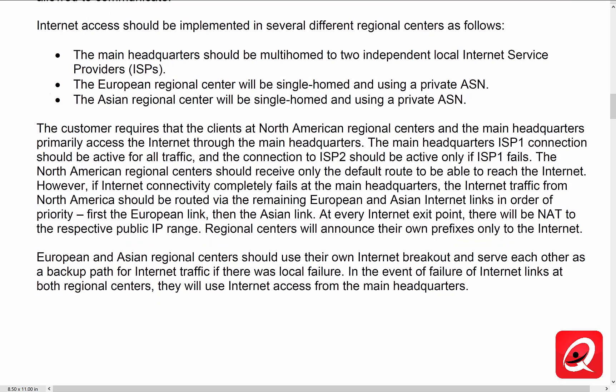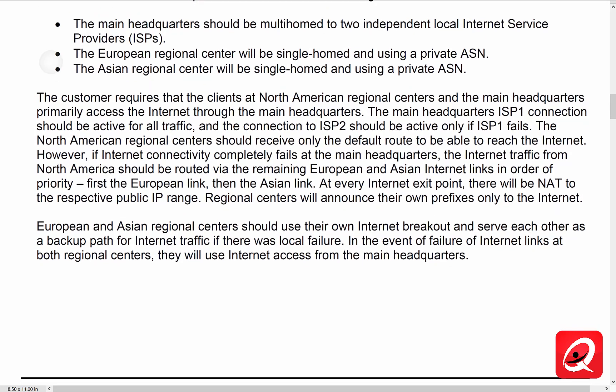Internet access should be implemented in several different regional centers as follows. The main headquarters should be multi-homed with two independent local internet service providers, meaning we'll have two routers at the headquarters location being multi-homed to two separate ISPs. The European regional center will be a single-homed connection using a private ASN, and the Asian regional center will be a single home using a private ASN. So in the case of our headquarters location, we're most likely going to use provider-independent addressing — essentially becoming the service provider for that address space. At the Asia and European regional centers, we're going to use provider-provided or provider-assigned addresses because we are using a private ASN. If we're using a private ASN, we can't act as our own service provider.